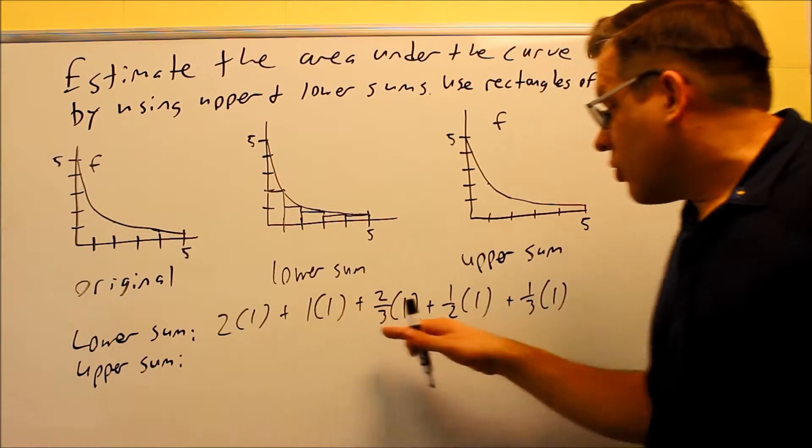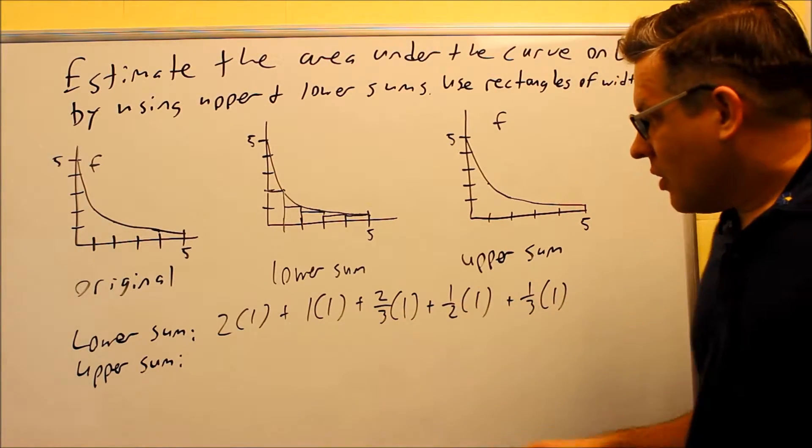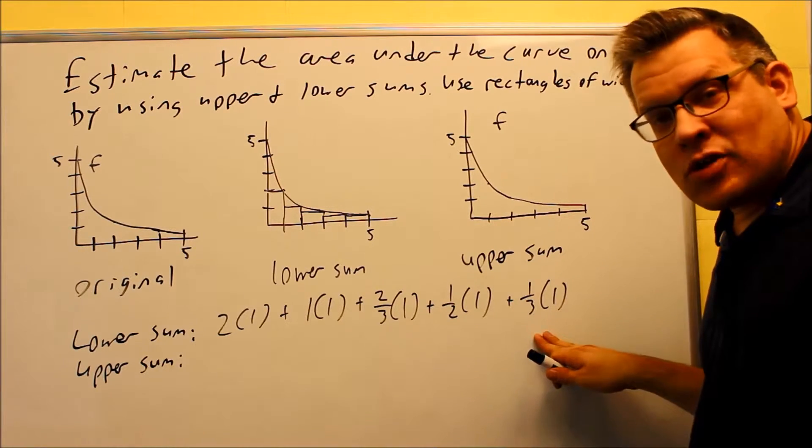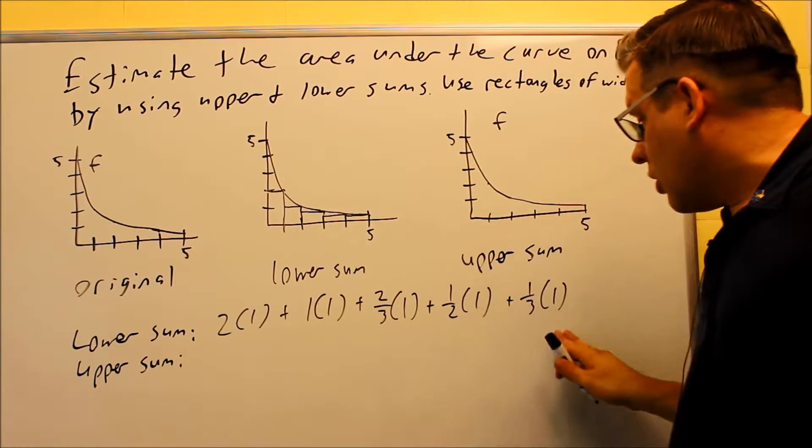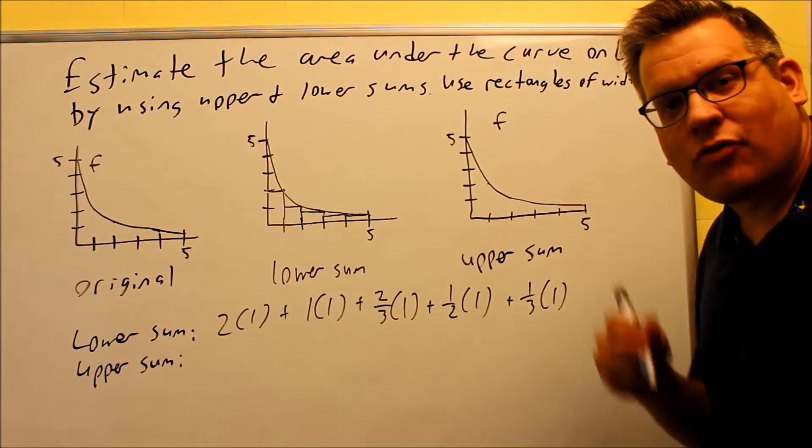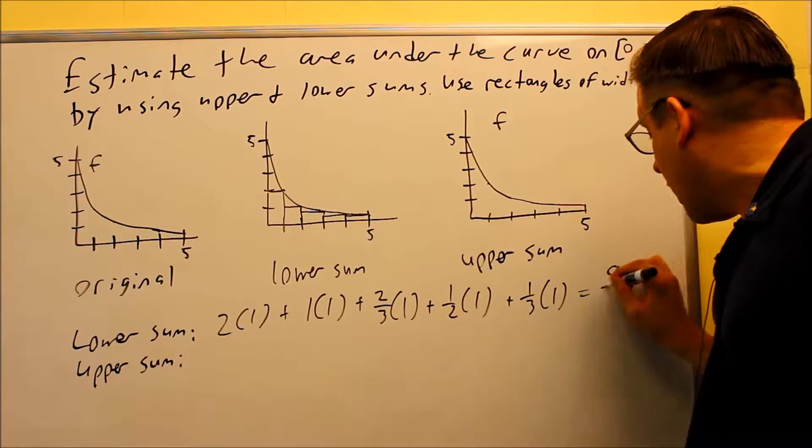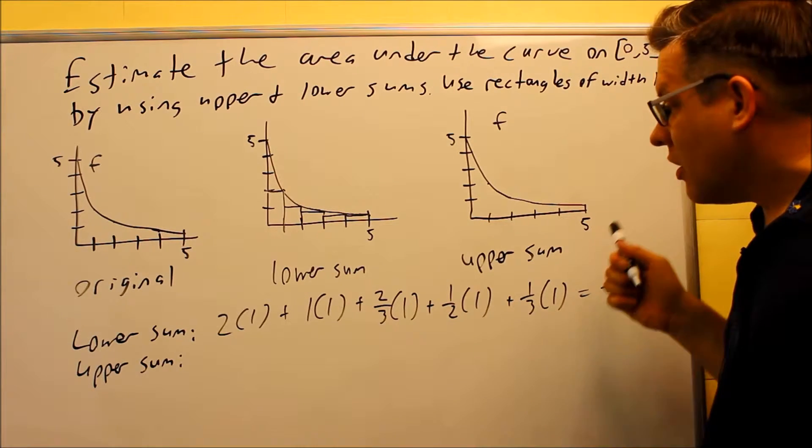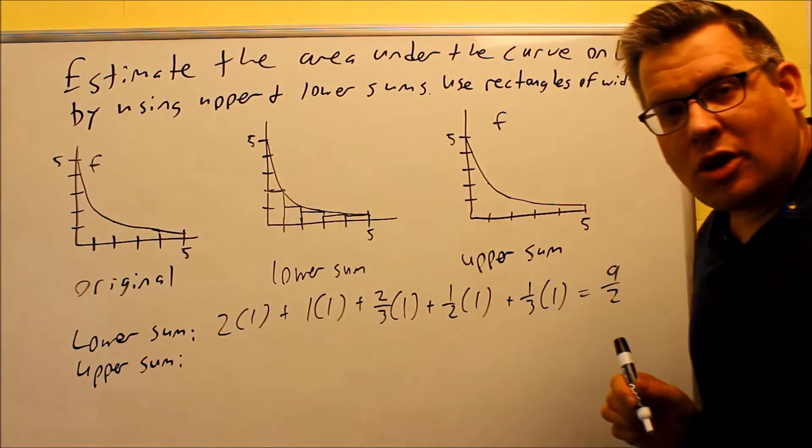So then what we're going to do is add all this together. So 2 plus 1, 2/3 and 1/3 adds up to 1 also, so that's going to be 4, and then 4 and a half. So you can either write your answer as 4.5, or I'll do the fraction form, it's going to be 9/2. So 9/2 is the area by using lower sums.